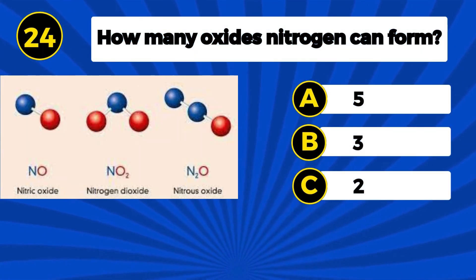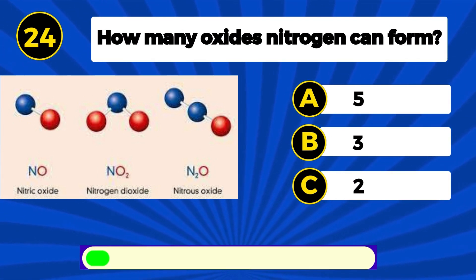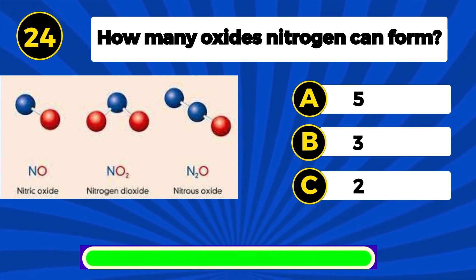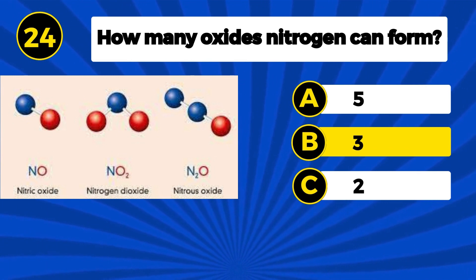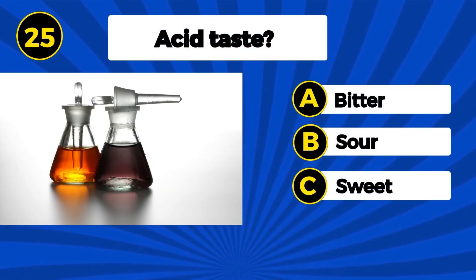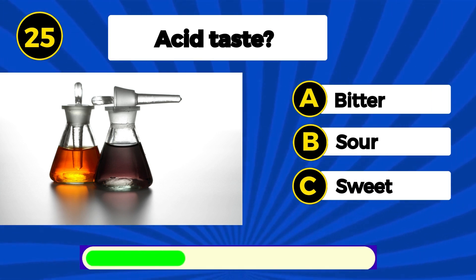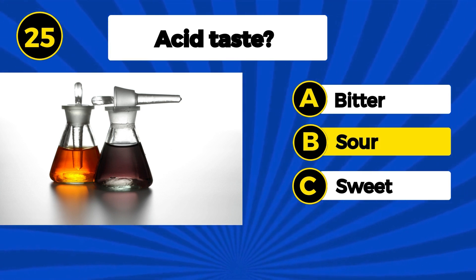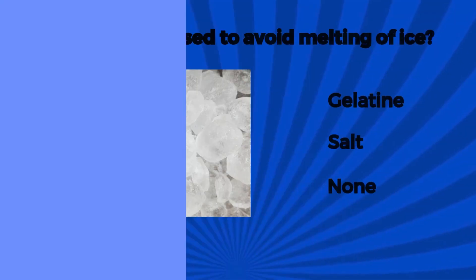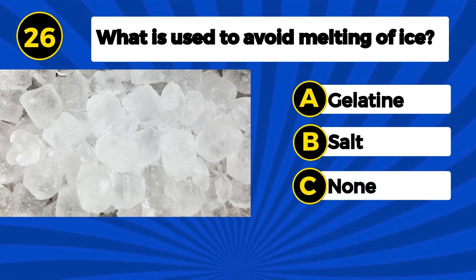Glycogen. How many oxides can nitrogen form? Three. Acid taste is? Sour.